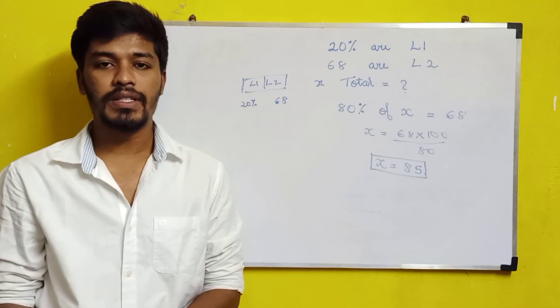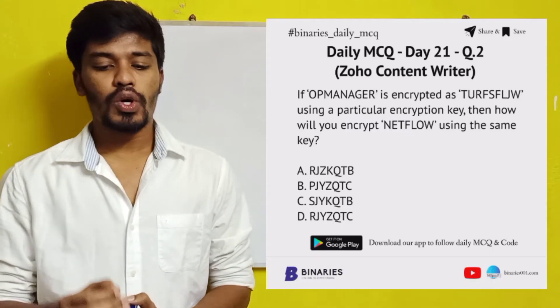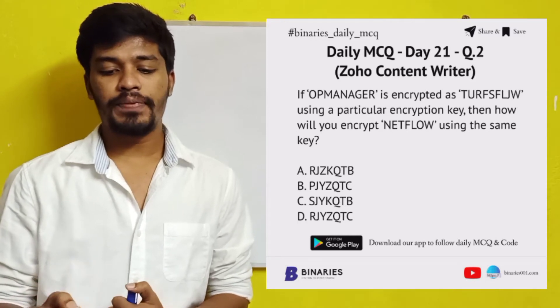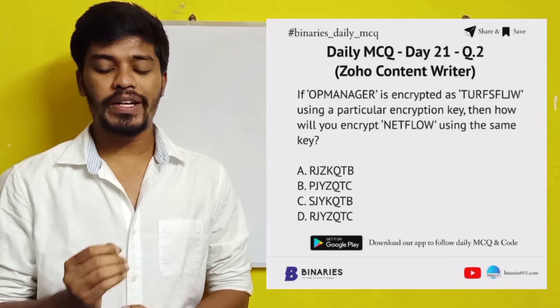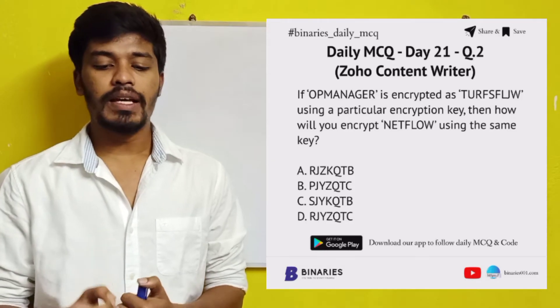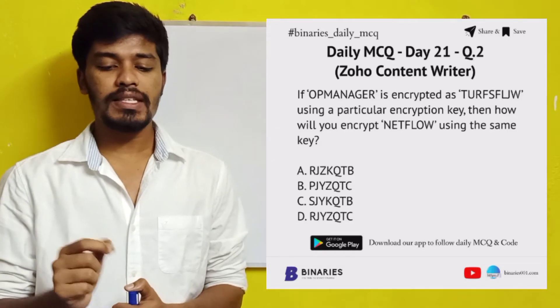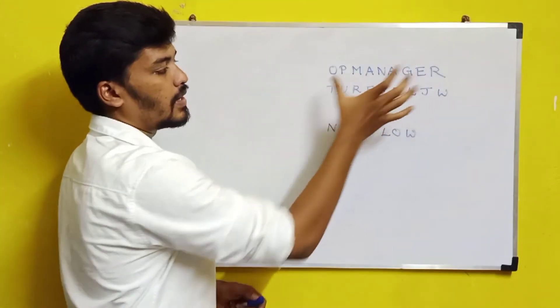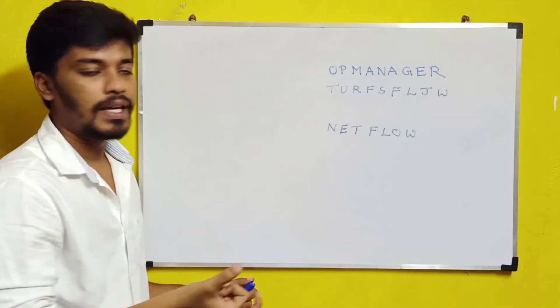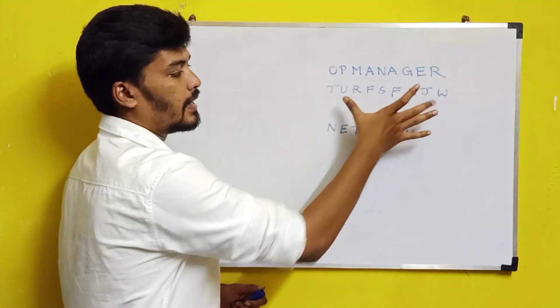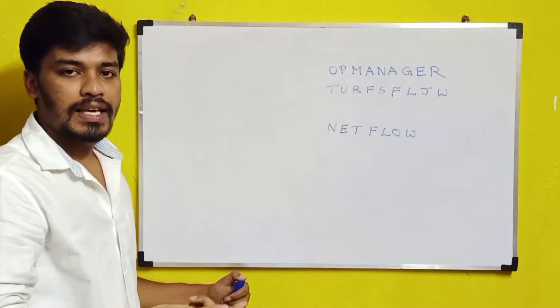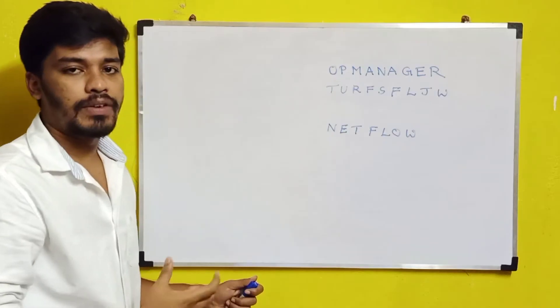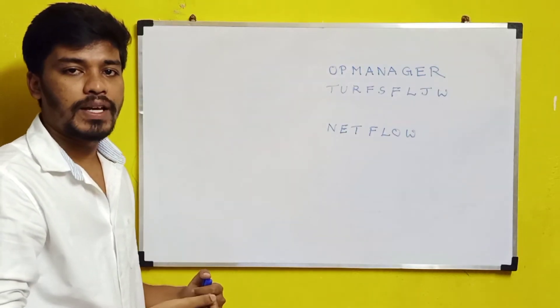The next question is: if OP manager is encrypted as TURFSLJW using a particular encryption key, then how will you encrypt NetFlow using the same key? So OP manager is encrypted using some key, and the result is TURFSLJW. For the same encryption pattern, what will be the answer for NetFlow?